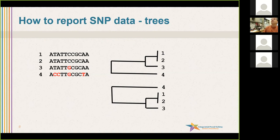The important thing to remember when you look at trees: don't look up and down. Don't say one and two are similar, then two is similar to three, three is similar to four — because these trees you can rotate. Every time you have a node you can rotate it. So if you look at the bottom, I took the same tree as on the top and simply rotated it. Now four is next to one, even though four is very different. Resist the temptation to look up and down and just see what's next to each other — you really need to look at the common ancestor node that connects two things to interpret those trees.